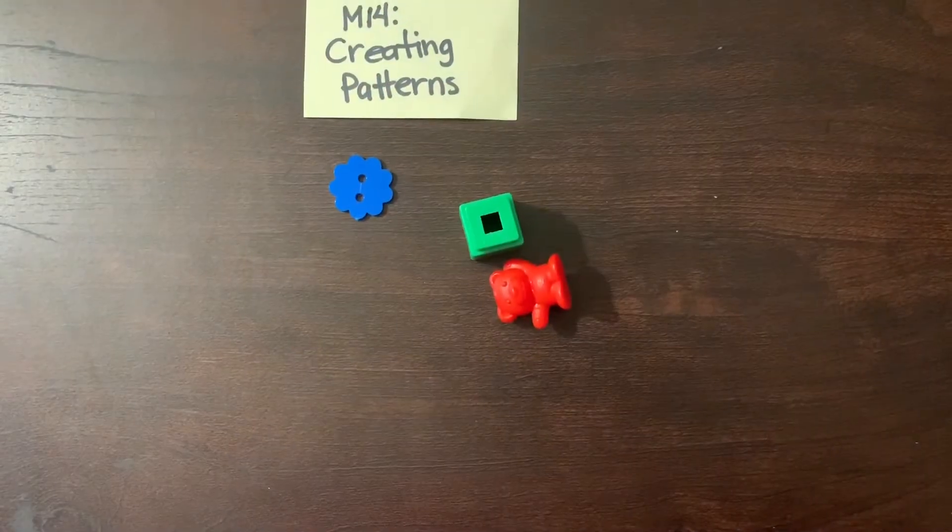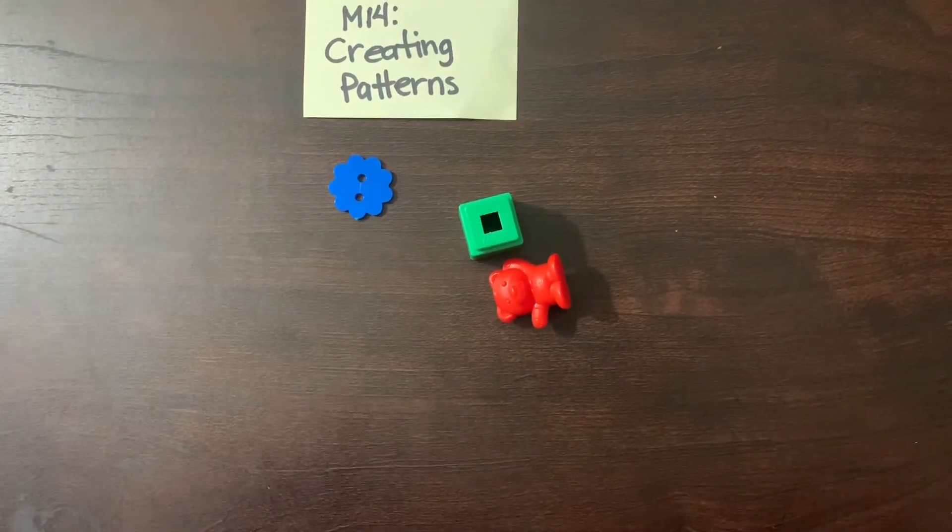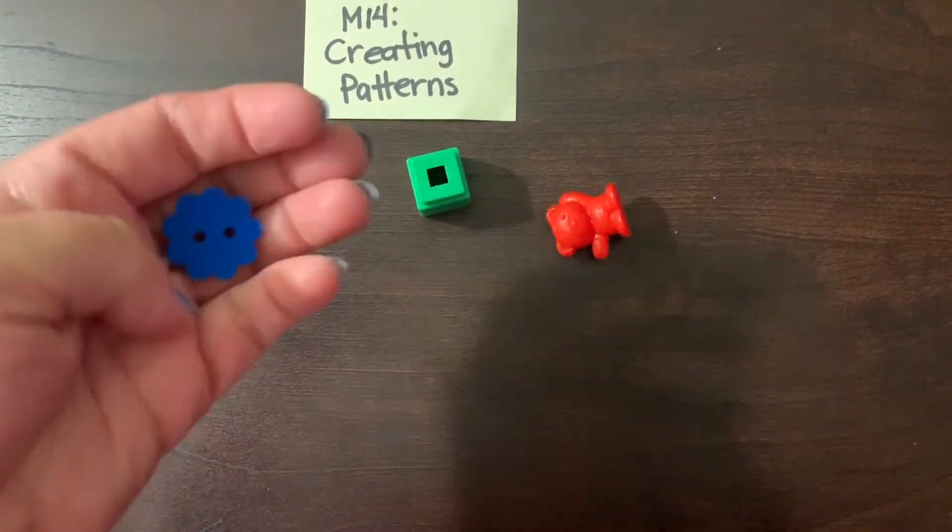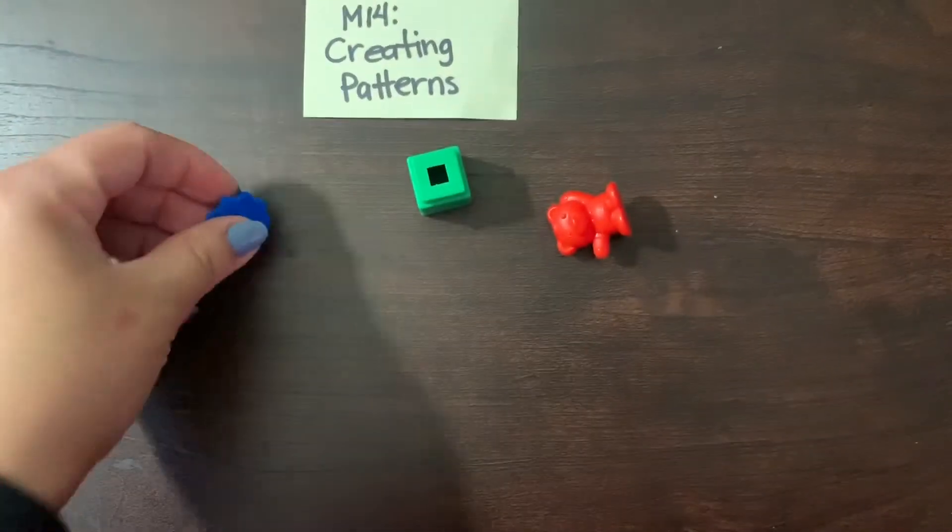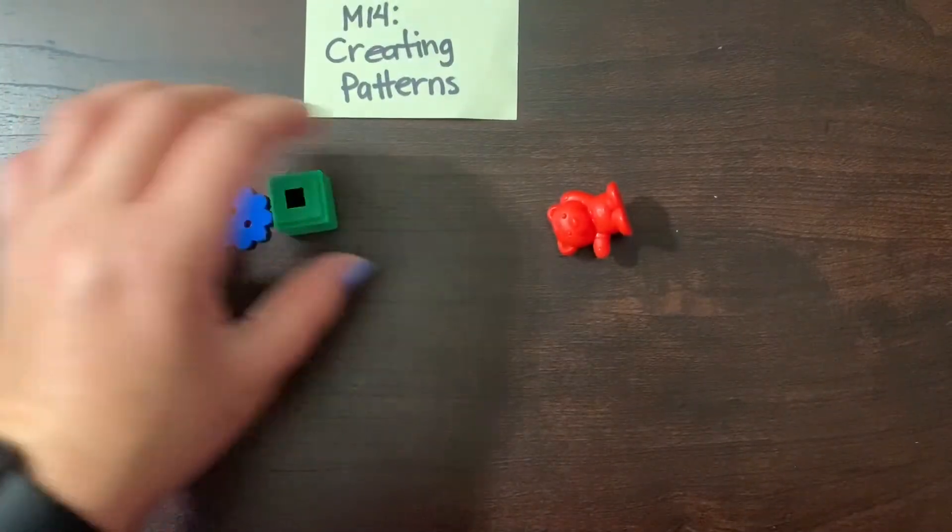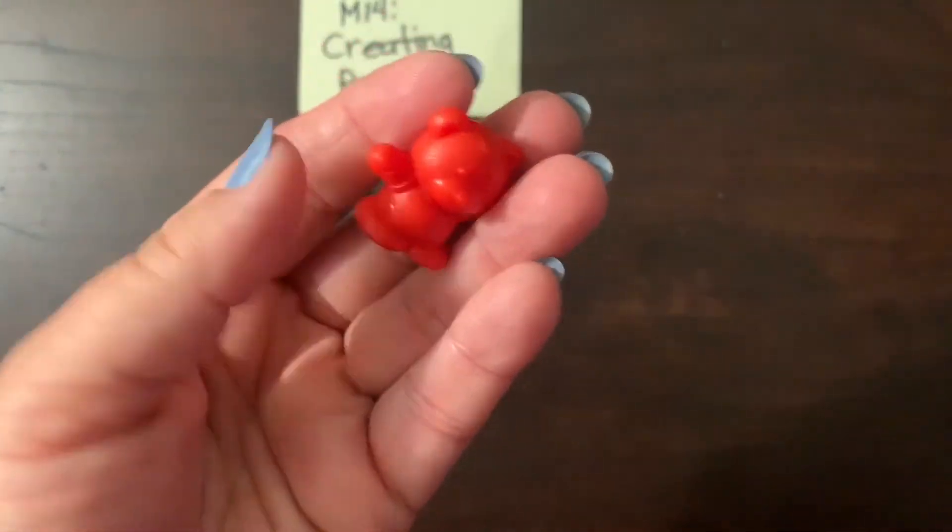Okay, so Miss Evie gathered her stuff to do her patterns. I have three different things. I have a button, a cube, a Unifex cube, and a bear.